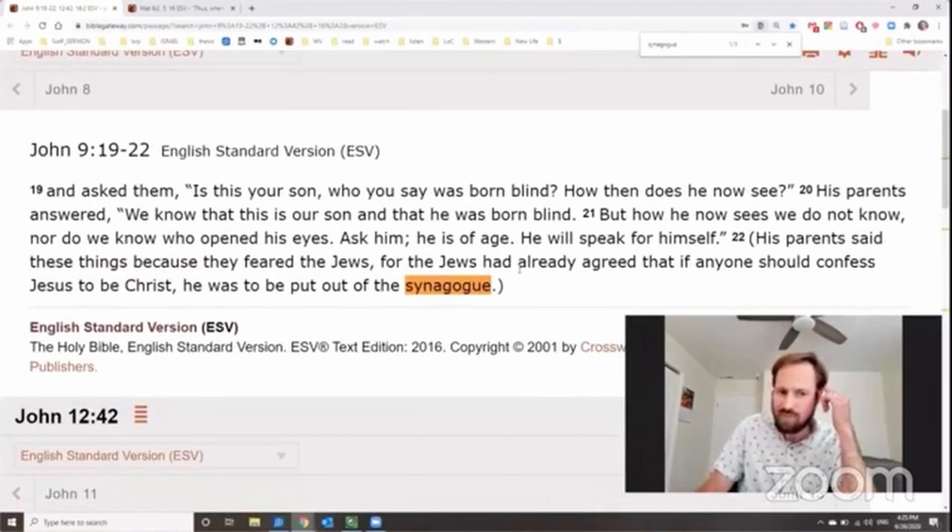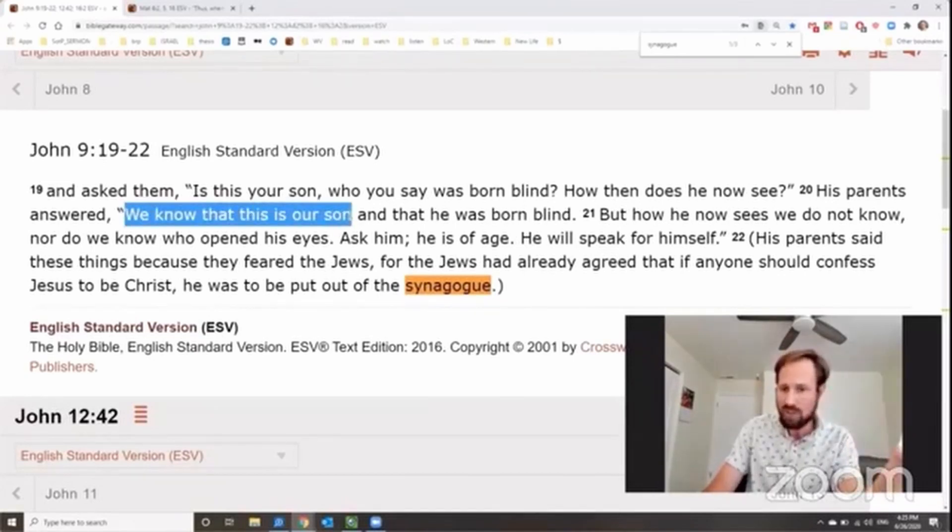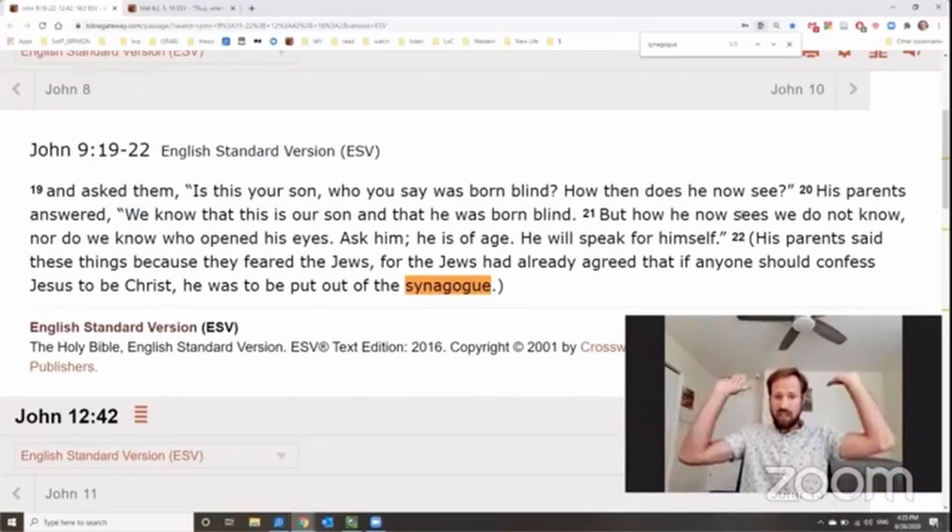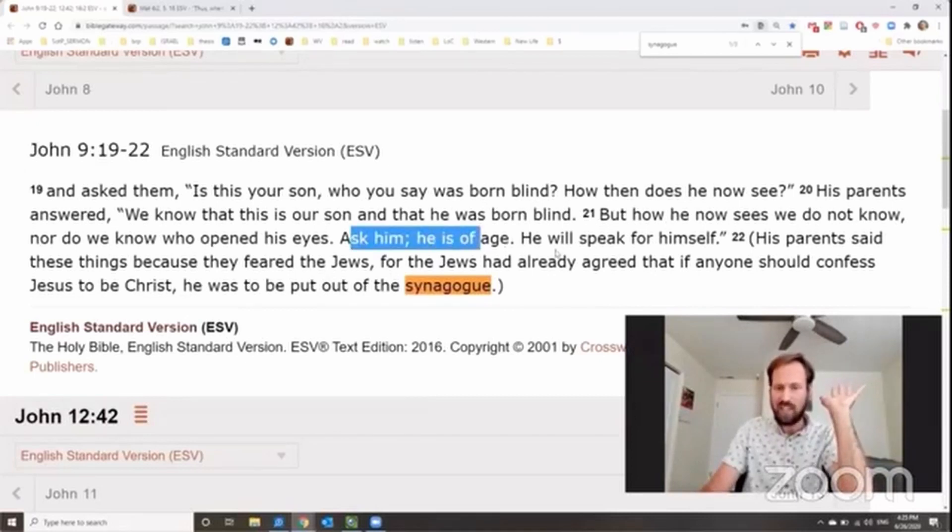So you remember in John 9, there's the guy who was born blind and Jesus healed him. He can see. And this causes a whole bunch of confusion and difficulty and frustration from the Pharisees. And they try to explain this miracle away. And they go to his parents, the formerly blind man's parents. And they're like, how is this guy seeing? And look how his parents respond. It's super interesting. They say, we know this is our son. And we know that he was born blind. But how he sees now, we do not know. Like, don't ask me. Ask him. He's of age. He will speak to himself.